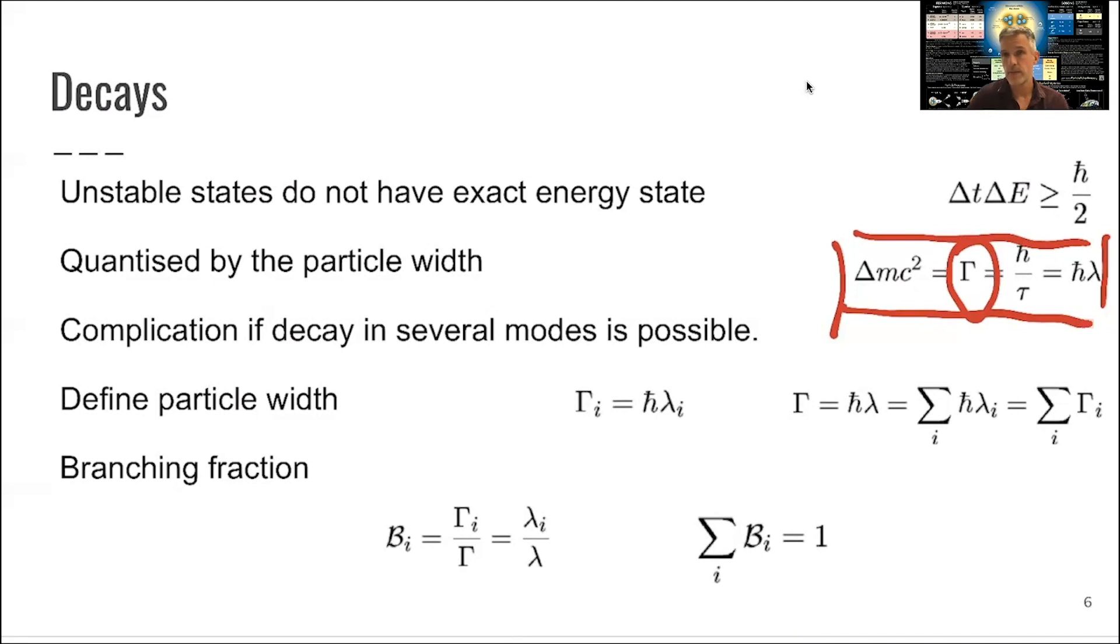Another complication can occur when there are multiple ways for the particle to decay. For example, the Higgs boson might decay into multiple particles. Here we define a partial width, where the partial width is defined as the width of the particle to decay into a specific mode. The total width of the particle is given by the sum of the partial widths of all possible ways for the particle to decay. Using this, you can calculate the likelihood of a particle to decay in a specific way. That's called the branching fraction, given by the partial width divided by the total width. The sum of the branching ratios is 1.